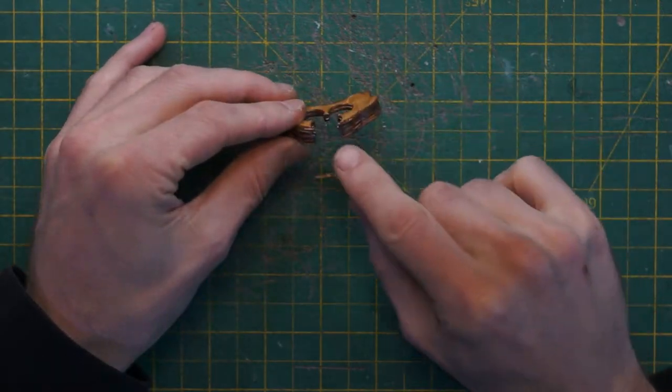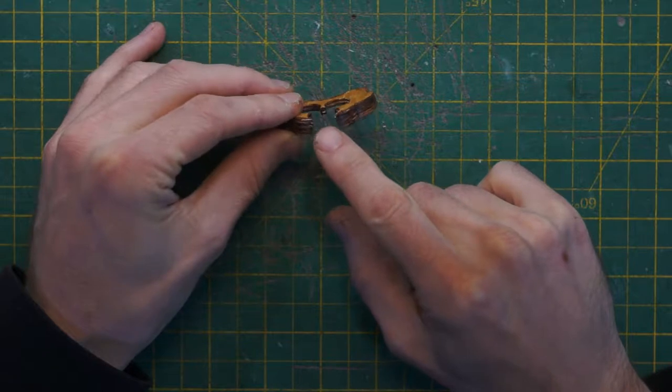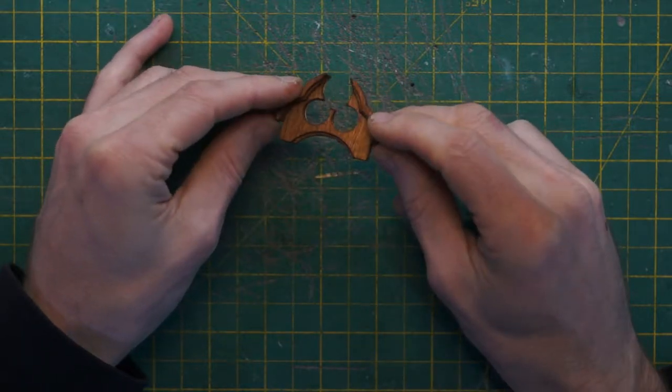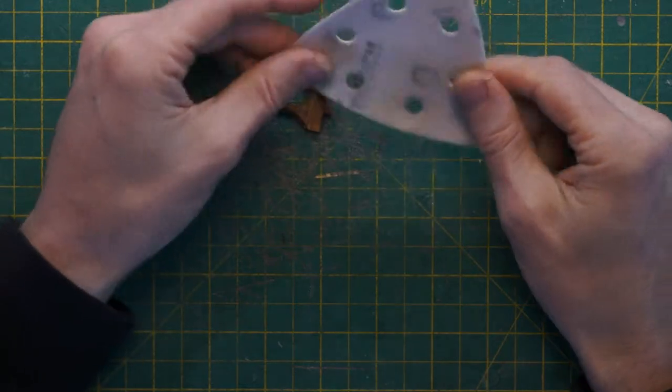You can see at the point there it's got some jagged edges but we're just going to use 120 grit sandpaper and we should be able to make a nice straight line out of that.